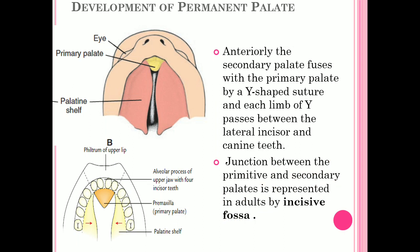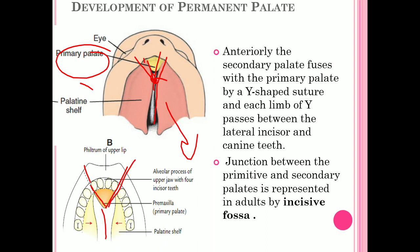The fusion of the primitive palate and secondary palate produces a Y-shaped suture, with the incisive fossa at its center. The secondary palate fuses anteriorly with the primary palate via this Y-shaped suture, with each limb of the Y passing between the lateral incisor and canine. The junction between the primitive and secondary palate is represented by the incisive fossa.